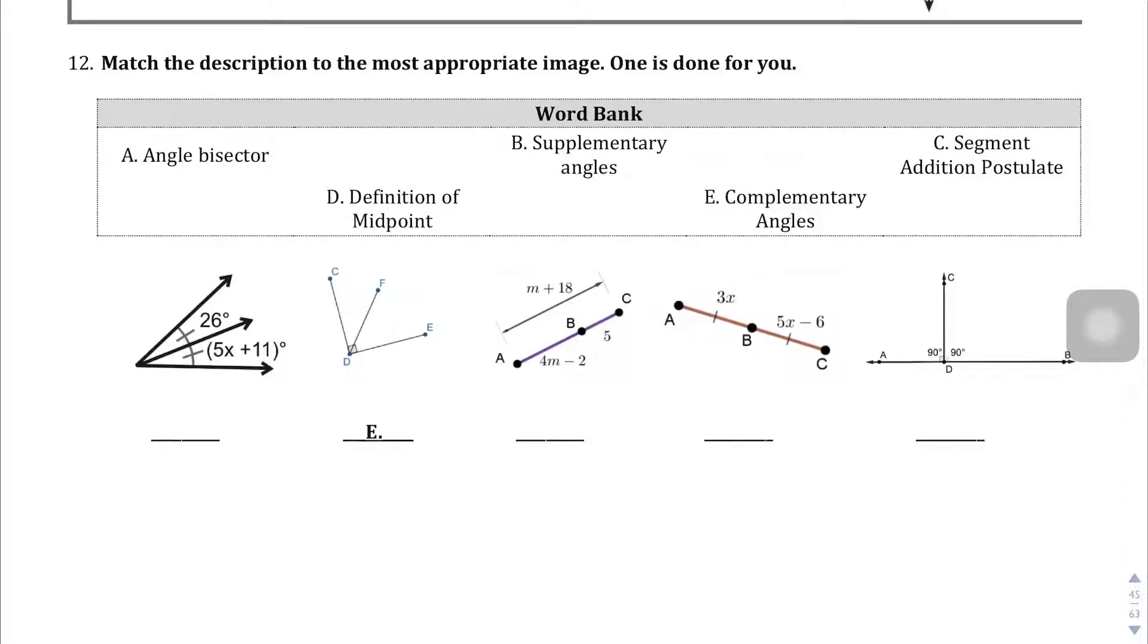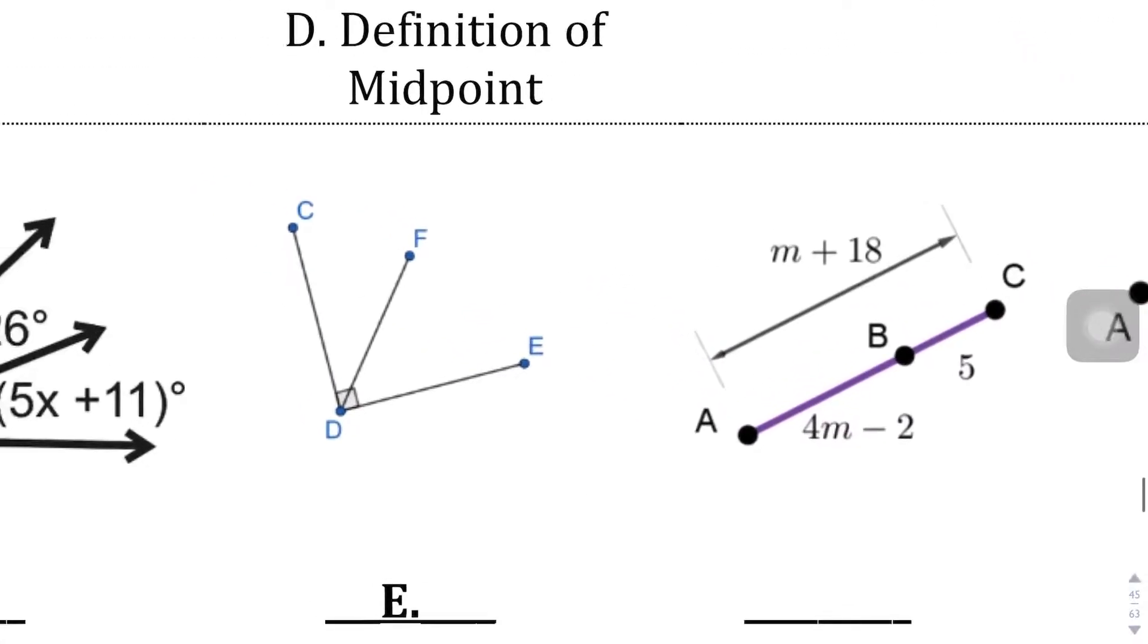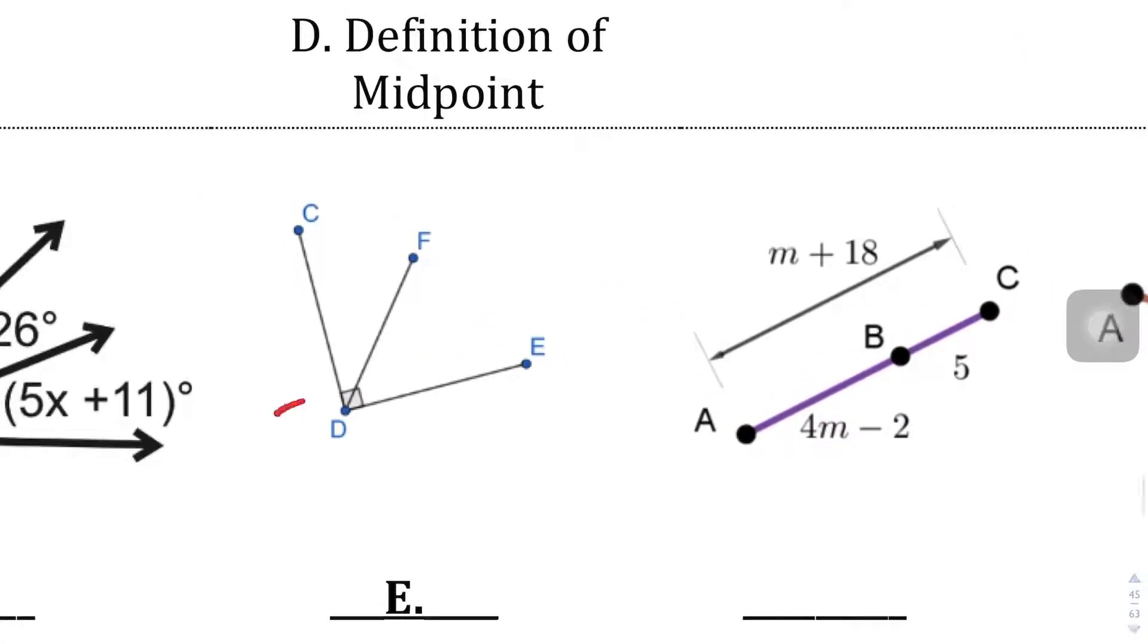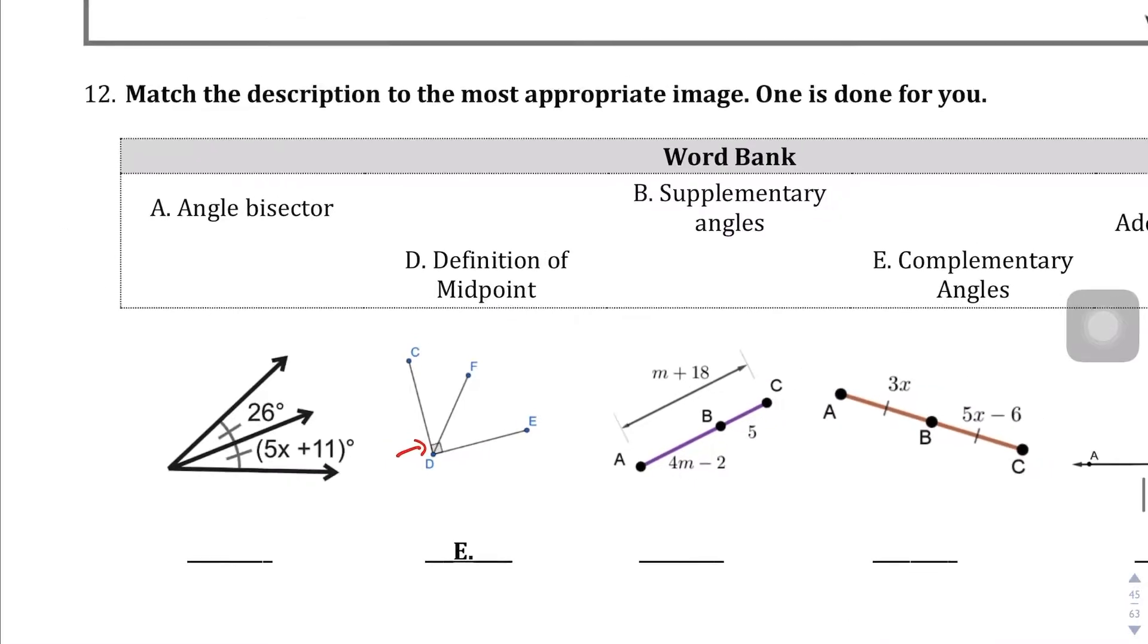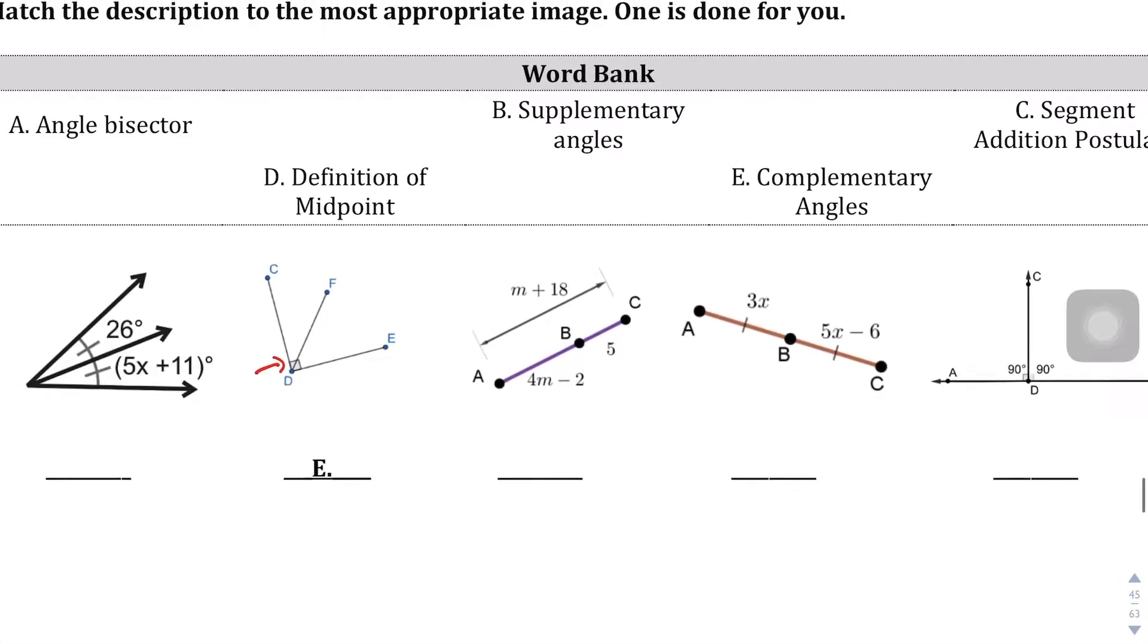We're on question 12. We're going to be matching the description to the most appropriate image. It looks like one of these is done for us, and specifically the one right here is done for us. The big hint is that little square in the corner there that tells us it's a complementary angle, therefore that's why the choice is E, complementary angle.